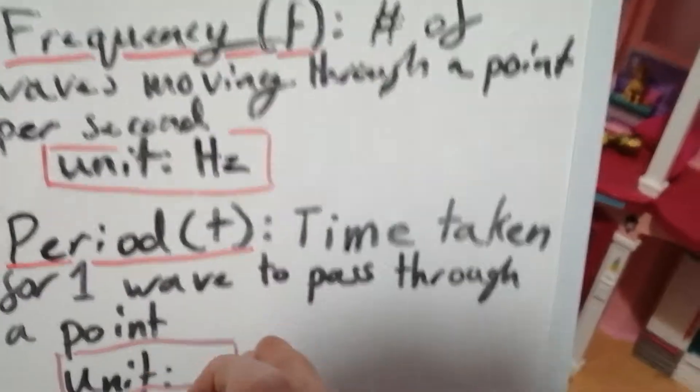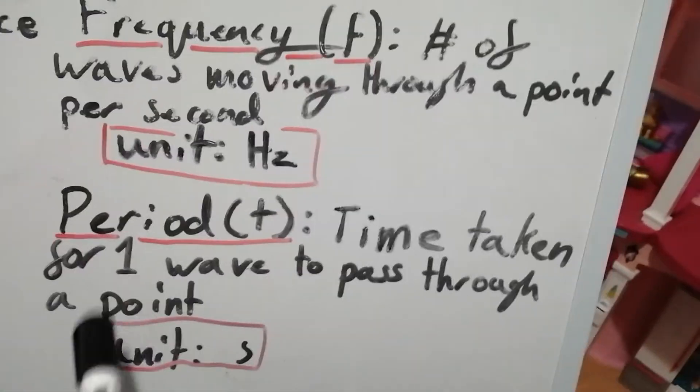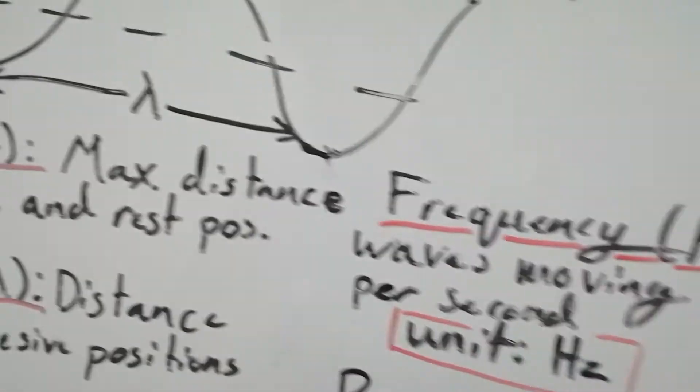Then we've got period, which is measured in seconds. This is the time taken for one wave to pass through a point. We have the point again, we let the wave pass through, and we measure that, which gives us the period.